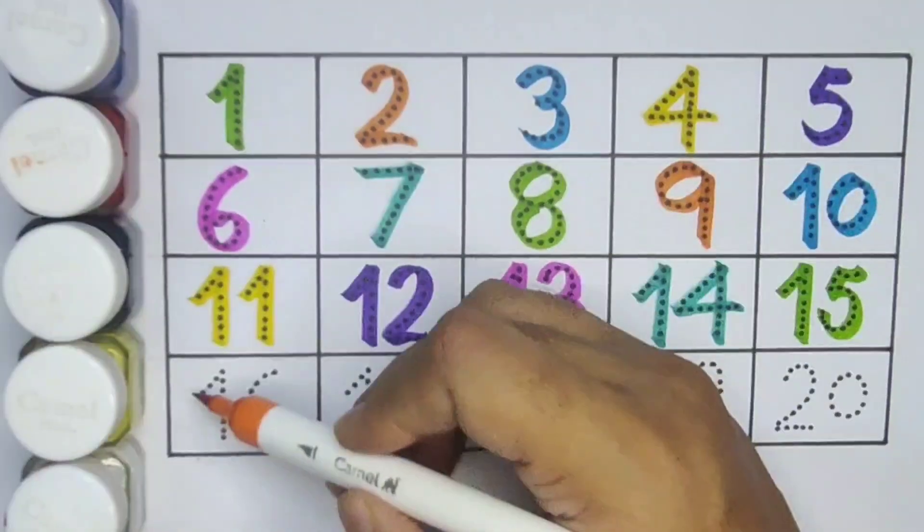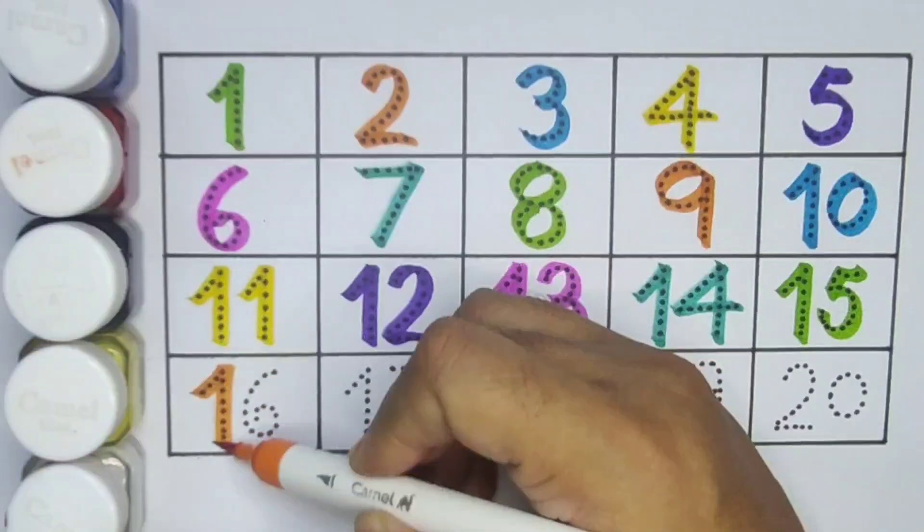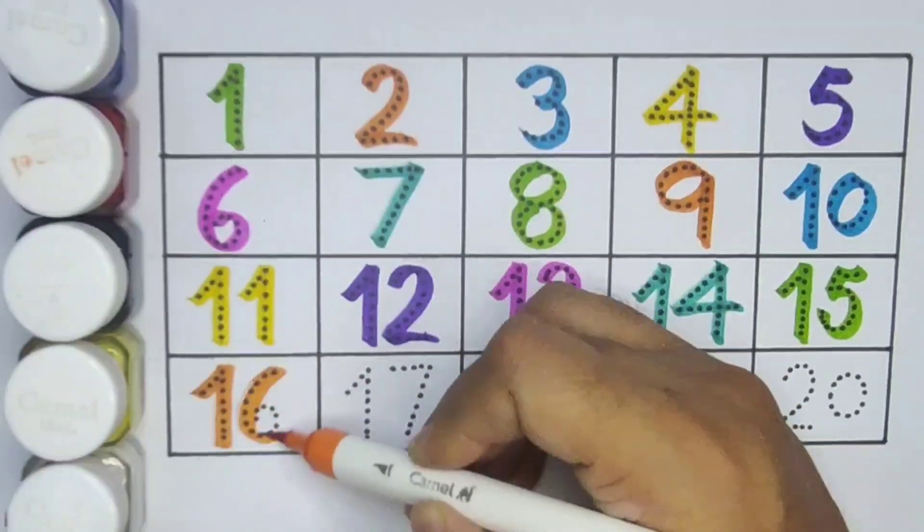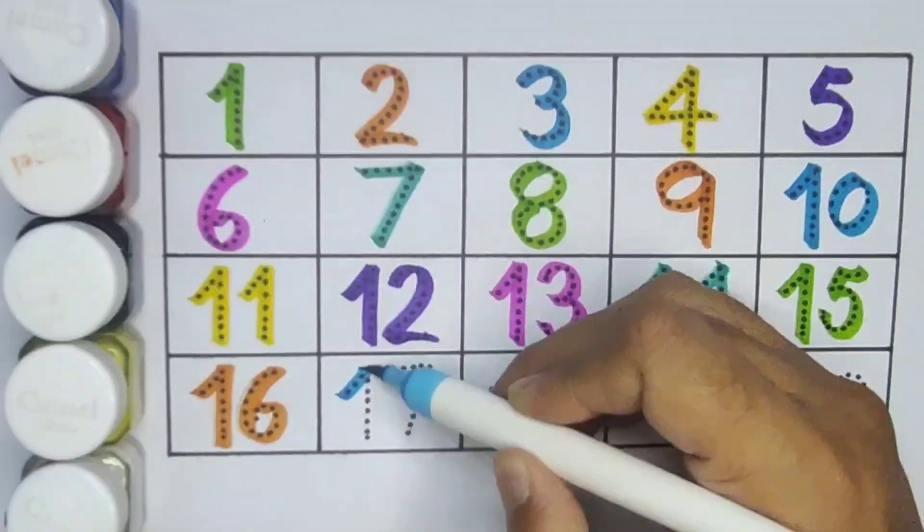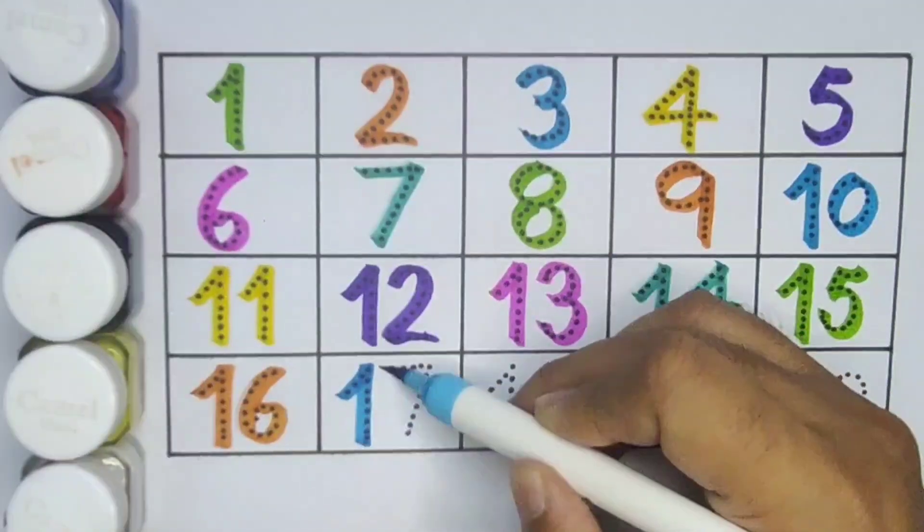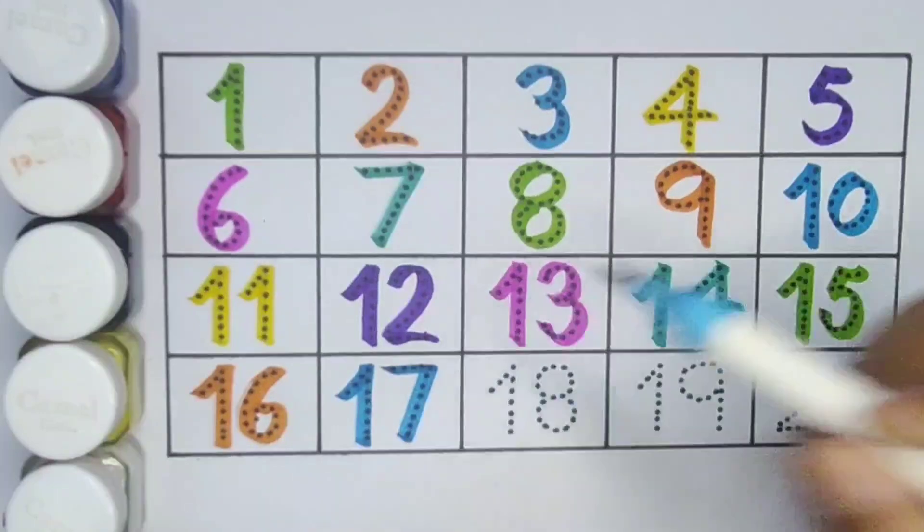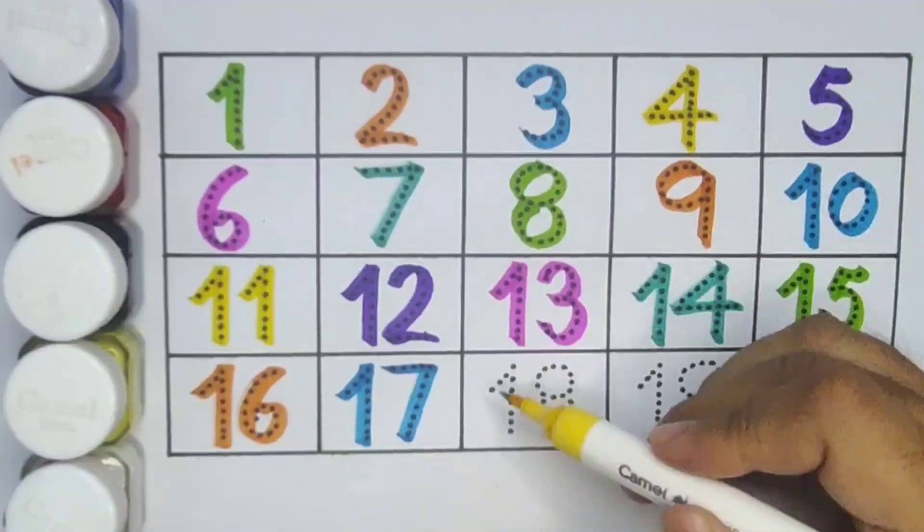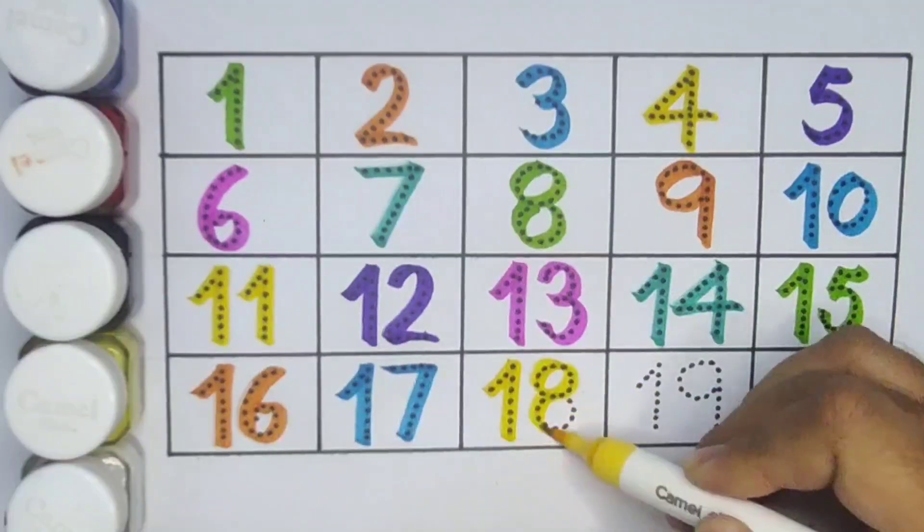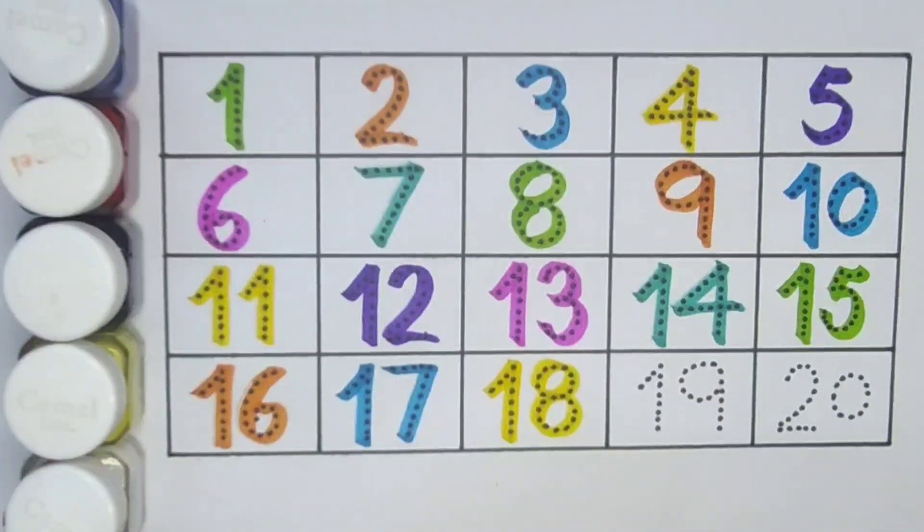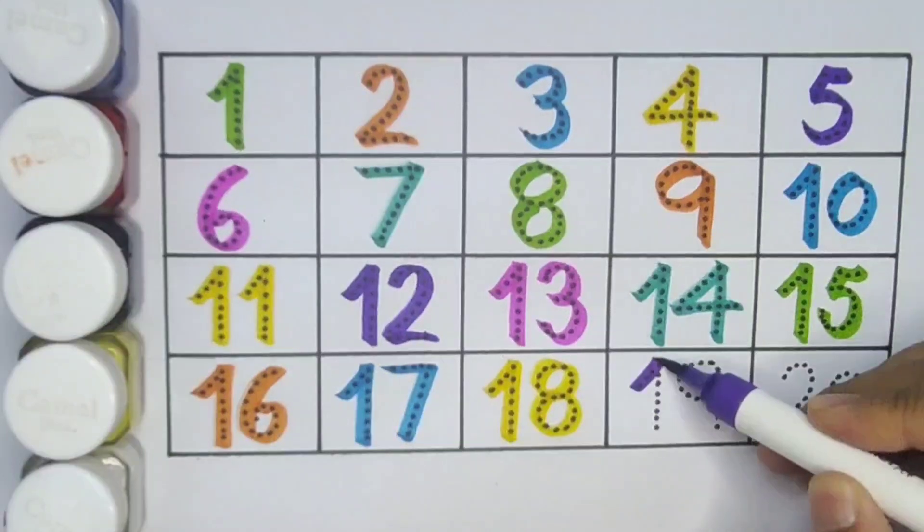Next kids, seventeen, one seven, seventeen, number seventeen. Next kids, eighteen, one eight, eighteen, number eighteen. Next kids, nineteen, one nine.